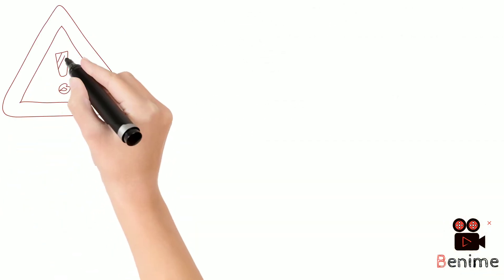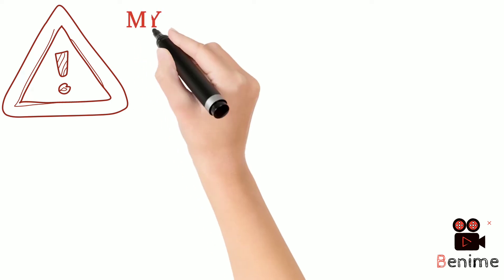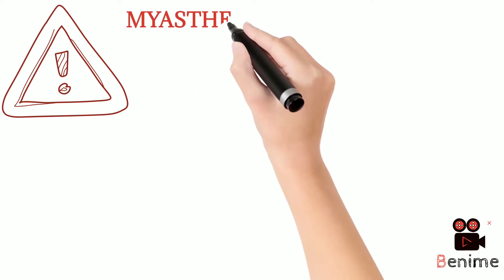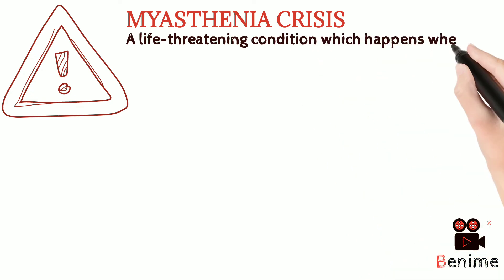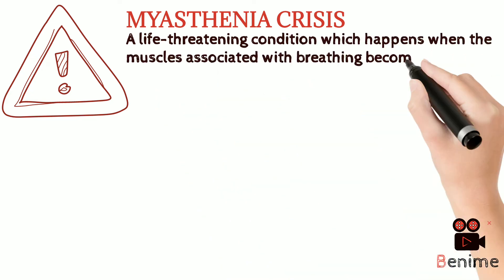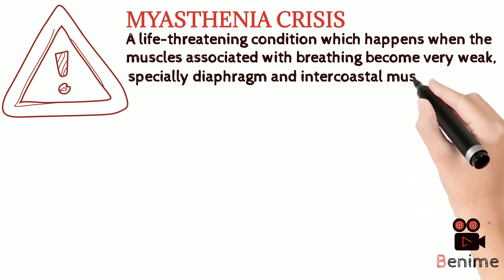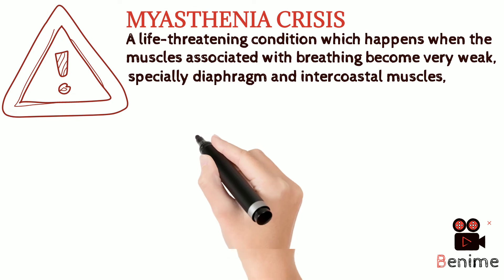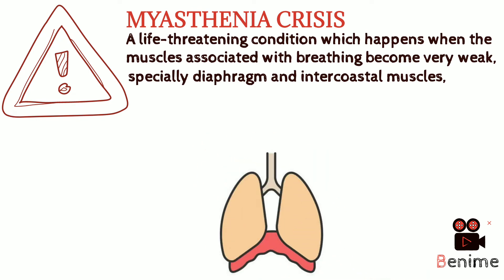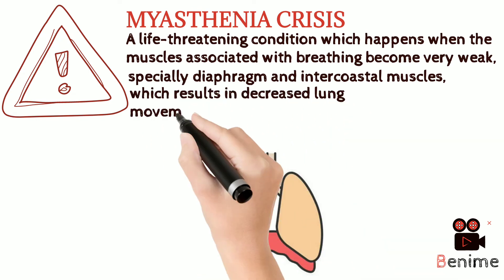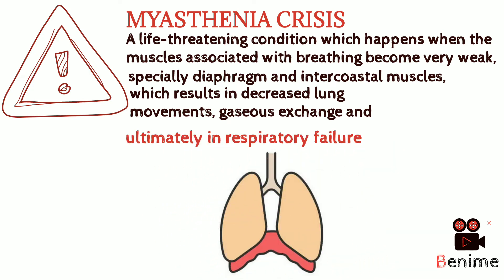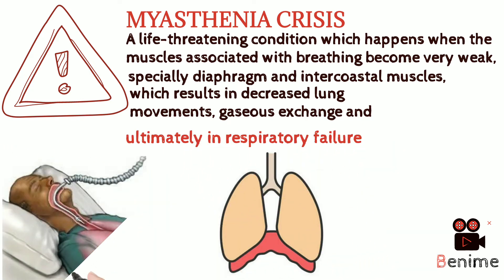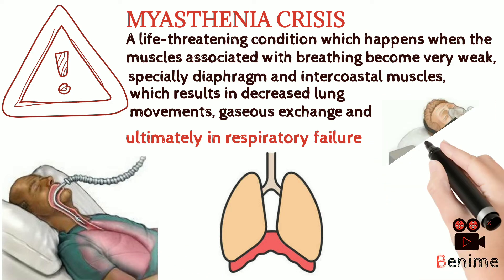One of the most feared complications of myasthenia gravis is the condition known as myasthenic crisis, which is a life-threatening condition caused by excess weakness and sometimes paralysis of the diaphragm and intercostal muscles. This leads to reduced gaseous exchange and can cause respiratory failure, and in severe cases can even cause death if not treated properly.